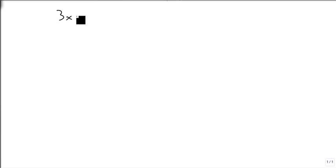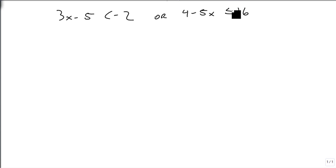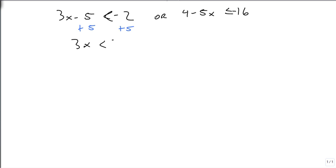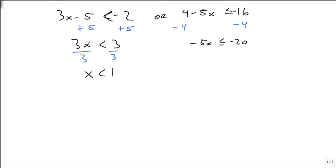For a second example: if we had 3x minus 5 is less than minus 2, OR 4 minus 5x is less than or equal to minus 16. We start by solving each side. Adding 5 to both sides gives 3x less than 3, then dividing by positive 3 gives x less than 1. On the other side, subtracting 4 from both sides gives minus 5x less than or equal to minus 20. Dividing by negative 5 flips the inequality to greater than or equal, giving x greater than or equal to 4.